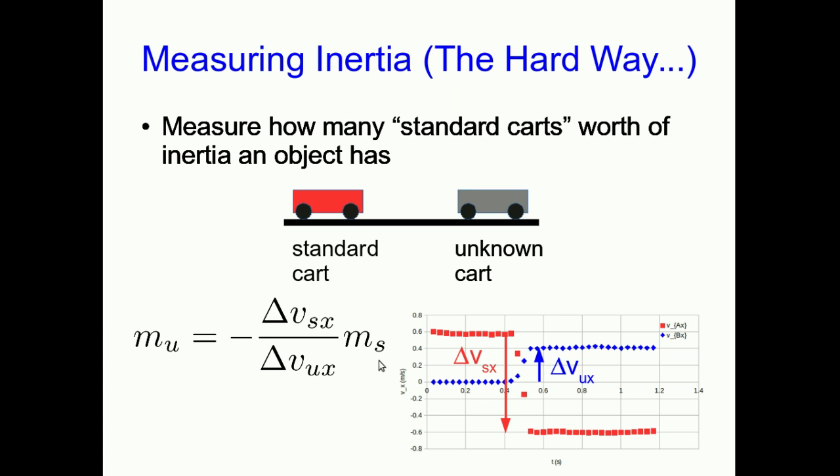All you have to do is replace your standard cart with a new standardized cart, which is one kilogram. That's its inertia, one kilogram. And you've suddenly found the inertia of the unknown cart in kilograms. So this is a way of measuring the inertia of an object. Now, I'm not going to claim it's a particularly efficient or easy way of measuring inertia, nor is it a particularly precise way, but it certainly would work.